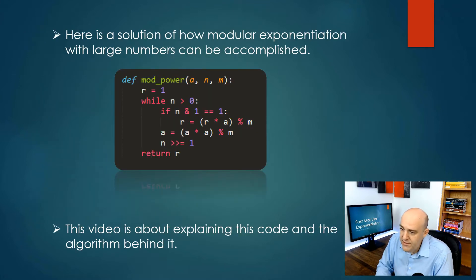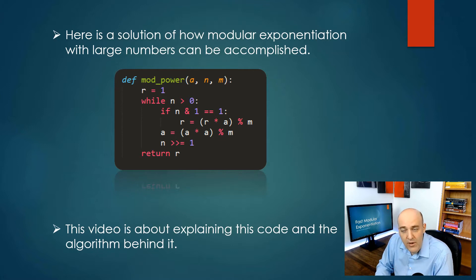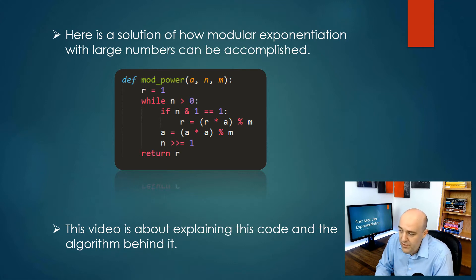Fortunately, there is another way: the fast modular exponentiation algorithm. There's a short snippet of code that will accomplish evaluating a to the n mod m even if n is very, very large. In this video, we want to explain what this algorithm is, why it works, and what this code means.